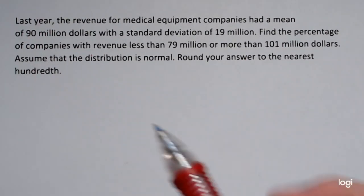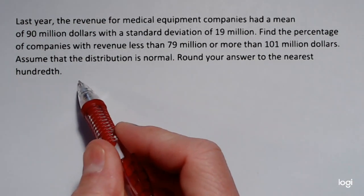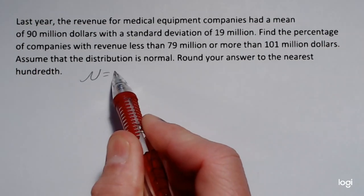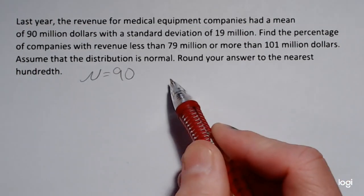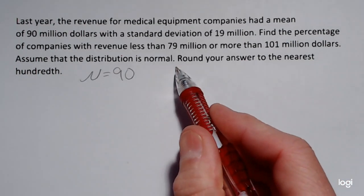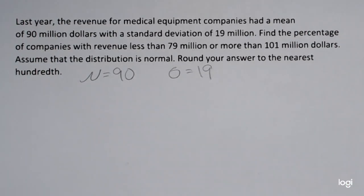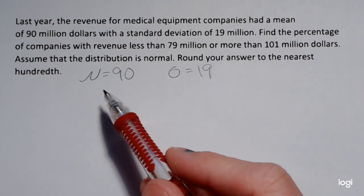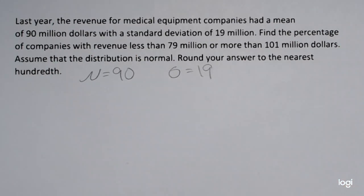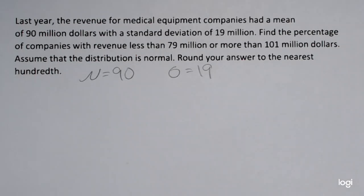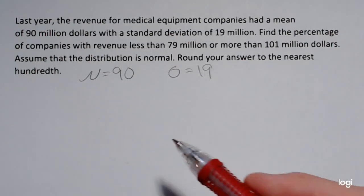Let me summarize what we're given and what we're looking for. We're given that the mean, or mu, is $90 million, and the standard deviation, or sigma, is $19 million. I'm assuming that this is the population information — that's why I'm using parameter notation. But you could use X-bar and S if you wanted to. Find the percentage of companies with revenue less than $79 million or more than $101 million.